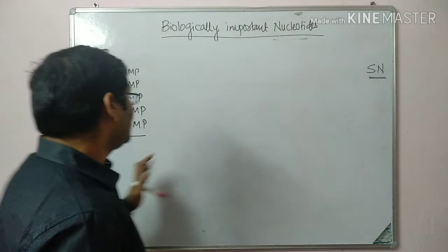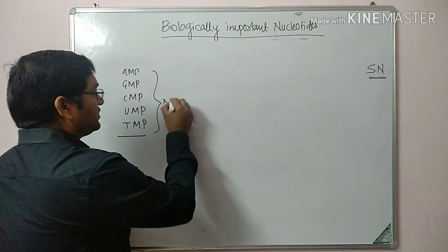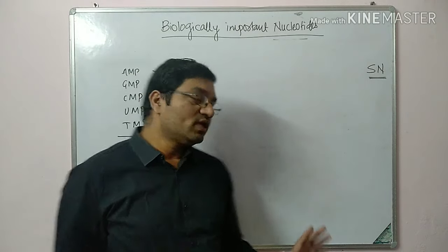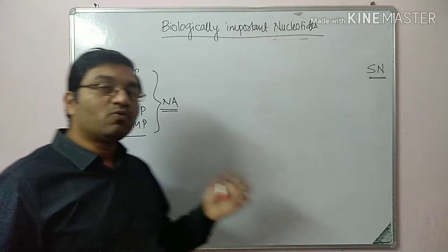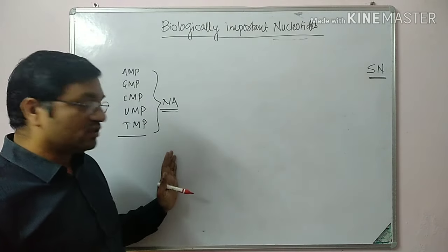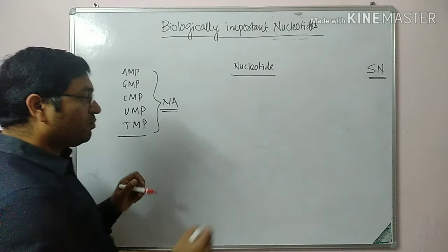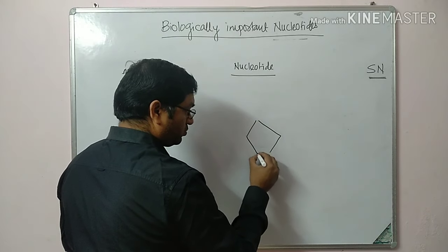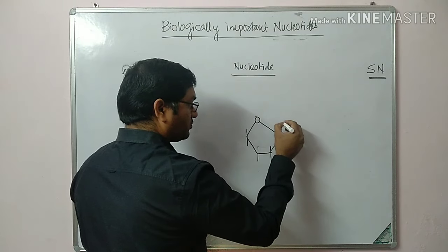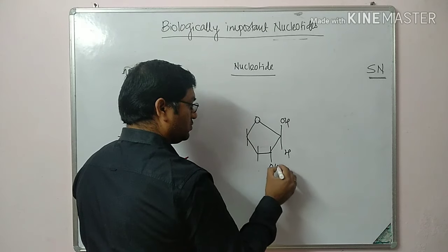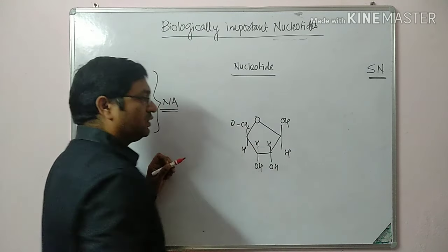The most important function of these nucleotides is they are incorporated as monomers of nucleic acids. There are two types of nucleic acids: deoxyribonucleic acid and ribonucleic acid, that is DNA and RNA. They are made up of nucleotides. A nucleotide is made up of a sugar molecule — this is ribose sugar.